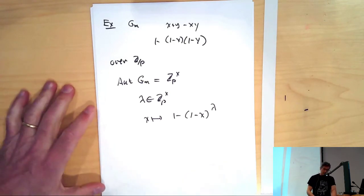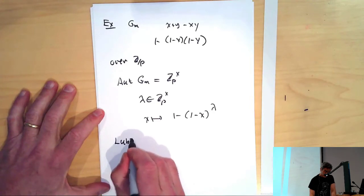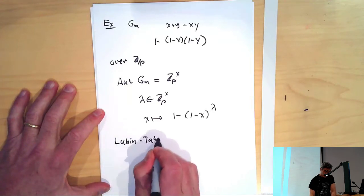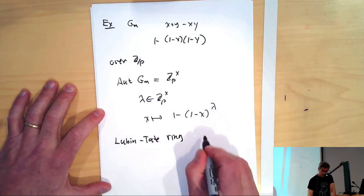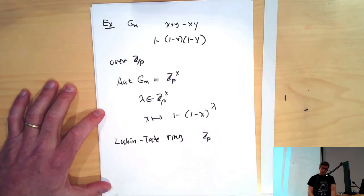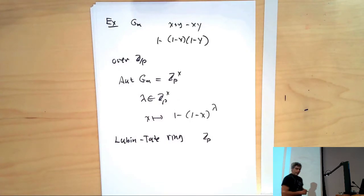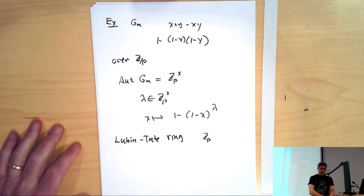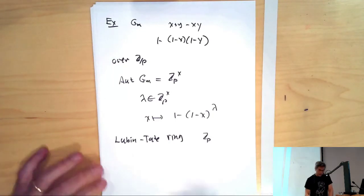And what's the Lubin-Tate universal deformation? The Lubin-Tate ring in this case is just the p-adic numbers itself. Remember, there are n minus 1 deformation parameters, and this was height 1. So I have some ring action of the p-adic units on the p-adic numbers. But that's generated by one element — it has to act trivially. So the topological generator gamma acts trivially.